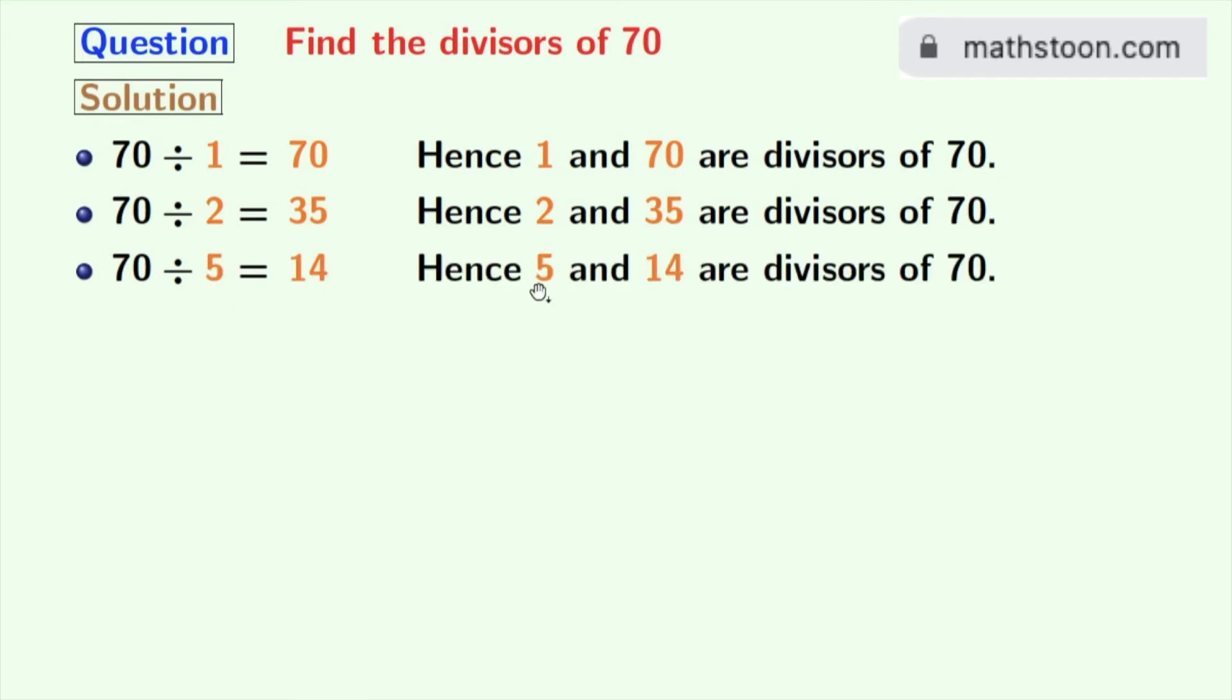Next number 6 does not divide 70, and next comes 7. 70 divided by 7 is 10, so 7 and 10 are the divisors of 70.